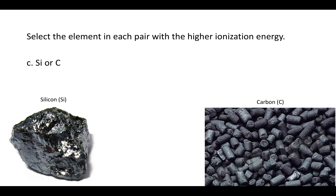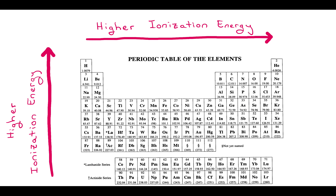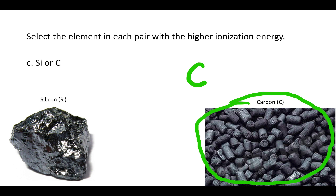So between silicon and carbon, which one is harder to rip an electron away from? Which one has a higher ionization energy? There's silicon there. Just above it is carbon. Because carbon is higher up, it's harder to rip an electron off of carbon. Carbon has the higher ionization energy.